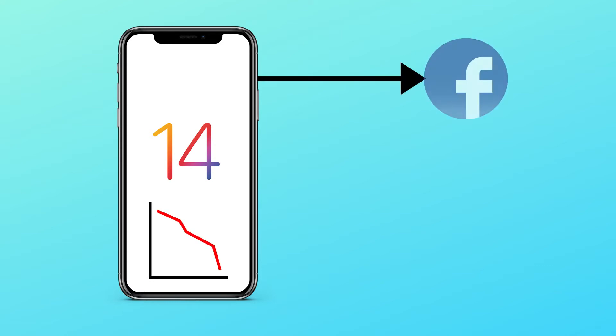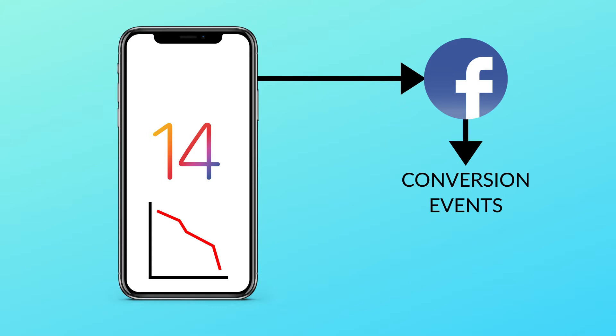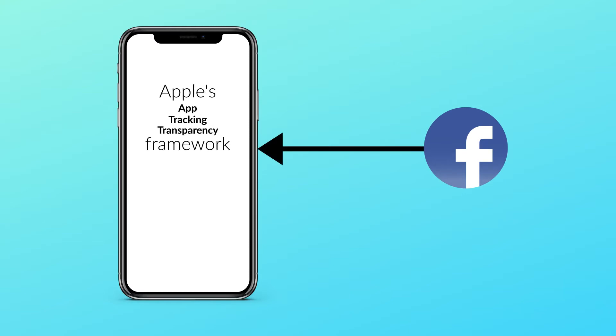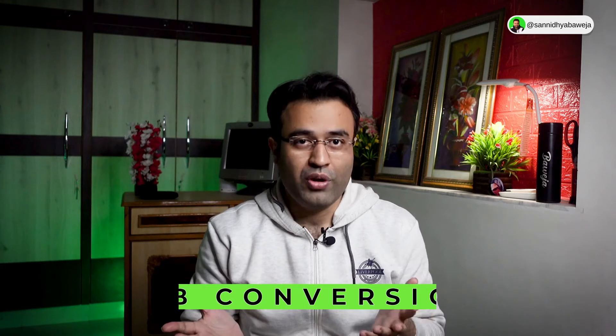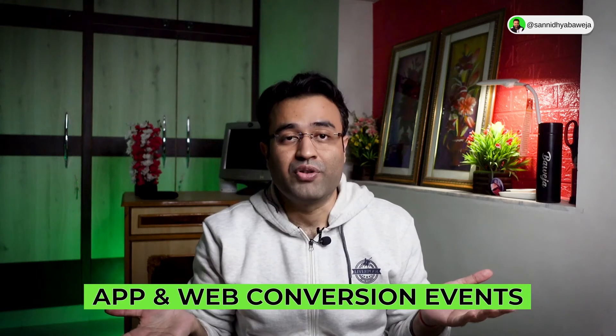The iOS 14 update has affected how Facebook receives and processes conversion events from Facebook tools such as the Facebook Pixel. To address these changes, Facebook will request permission through Apple's App Tracking Transparency framework to measure conversion events occurring on iOS 14 devices. As more people opt out of tracking, personalization and performance reporting will be limited for both app and web conversion events.